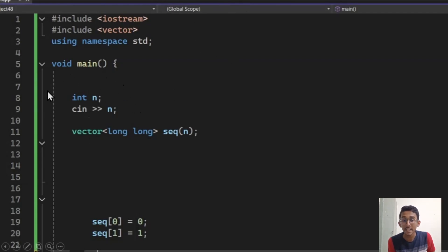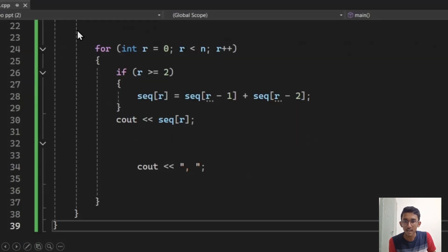Then I have defined the integer n, then taken the input from the user. Then I have defined the vector. The predefined terms have been defined here. Then I have created the for loop, the if statement as I explained.